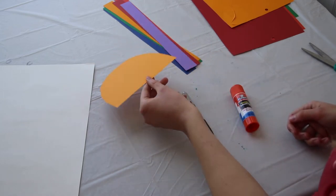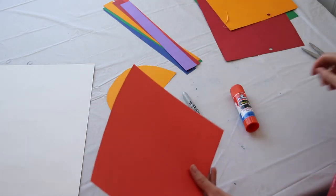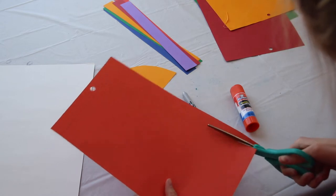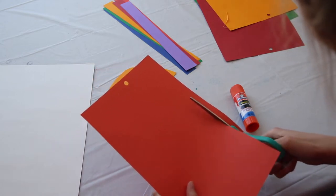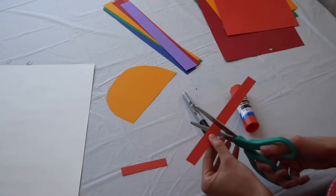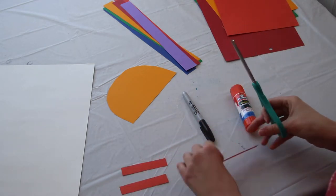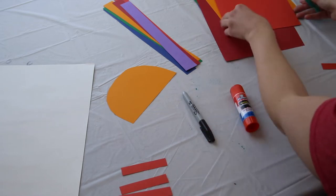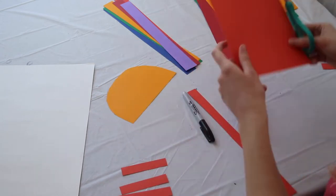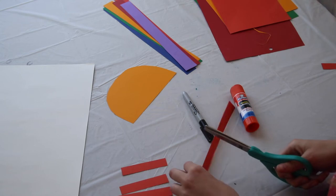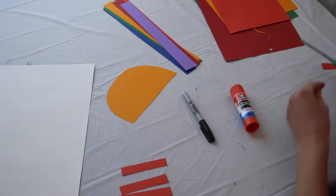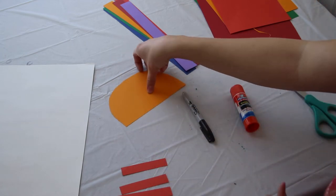This is going to be our sun. And a sun is not complete without some orange rays. So you're going to take your orange paper again. You're going to cut out a bit thinner. So I have six strips right here that are going to be the rays on my sun.